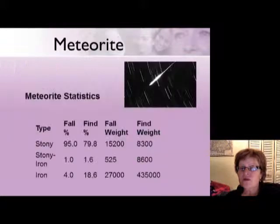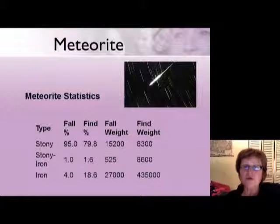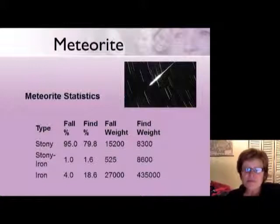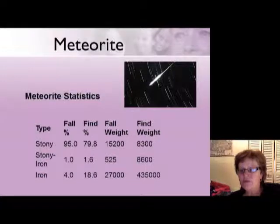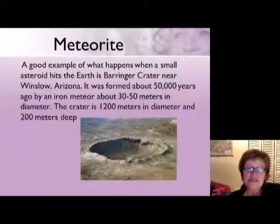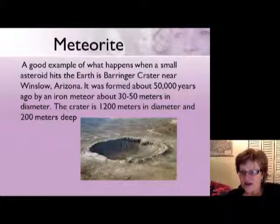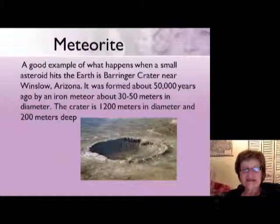In terms of meteorite statistics, most meteorites that come to Earth are stony meteorites — about 95 percent. The stony-iron is pretty rare, and iron meteorites are about 4 percent of all meteorites. There is a great example of a meteorite crater in Arizona — it's a good example because the dry climate prevents it from being erased by weathering. This is where a small asteroid hit the Earth.